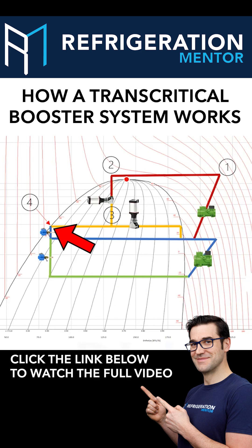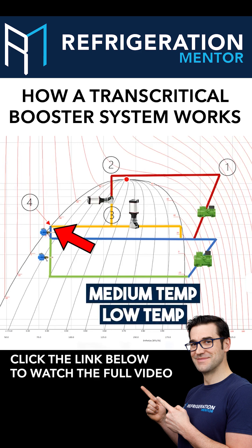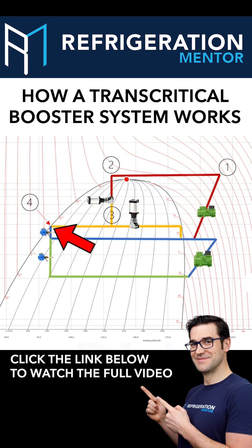Going to your medium temp as well as your low temp, depending on the design of the system. There are systems out there that have separate liquid lines for low temp and medium temp on CO2, but most booster systems just have one liquid line going out to both your medium and your low temp.